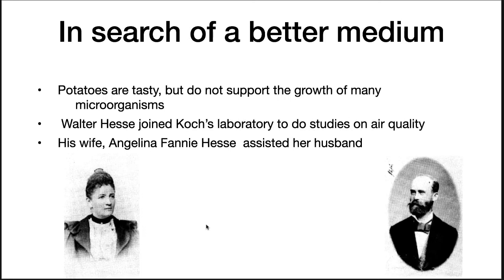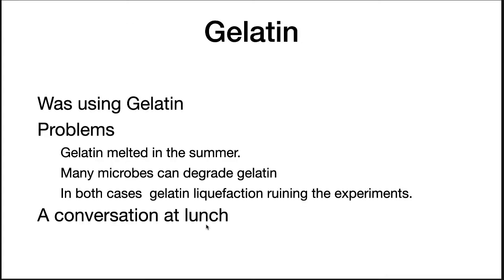Another important topic is the search for a better medium. These two people were in Robert Koch's laboratory. A lot of the work that Robert Koch did was using potatoes. However, potatoes failed to support the growth of many microorganisms, and Koch and his laboratory were constantly frustrated by the lack of a good solid medium. Walter Hesse joined Koch's laboratory to do studies on air quality, and he showed remarkable attention to detail in his work. His wife, Angelina Fanny Hesse, would often assist her husband in the laboratory. Walter was attempting to do his air quality experiments using a medium containing gelatin as the solidifying agent. In the summertime, temperatures would often rise above the melting point of gelatin, and microbes would often grow that were capable of degrading gelatin — in both cases causing liquefaction of the medium and ruining the experiments.